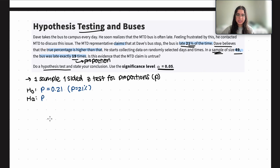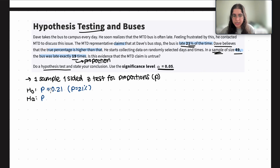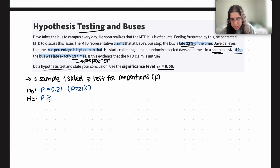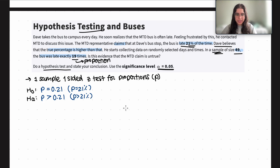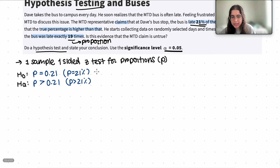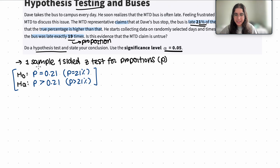The alternate hypothesis is what we're trying to prove with our gathered data — going against the claim. Dave believes the true percentage is higher than what MTD claims, so the alternate hypothesis is p greater than 0.21. That is the defining structure of our hypothesis test.